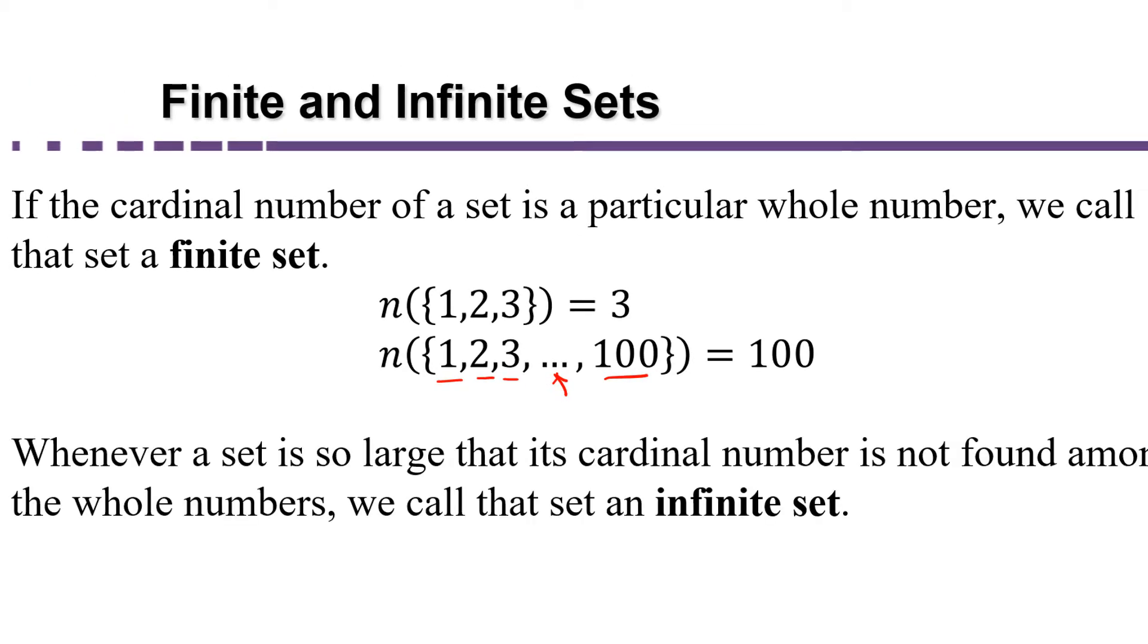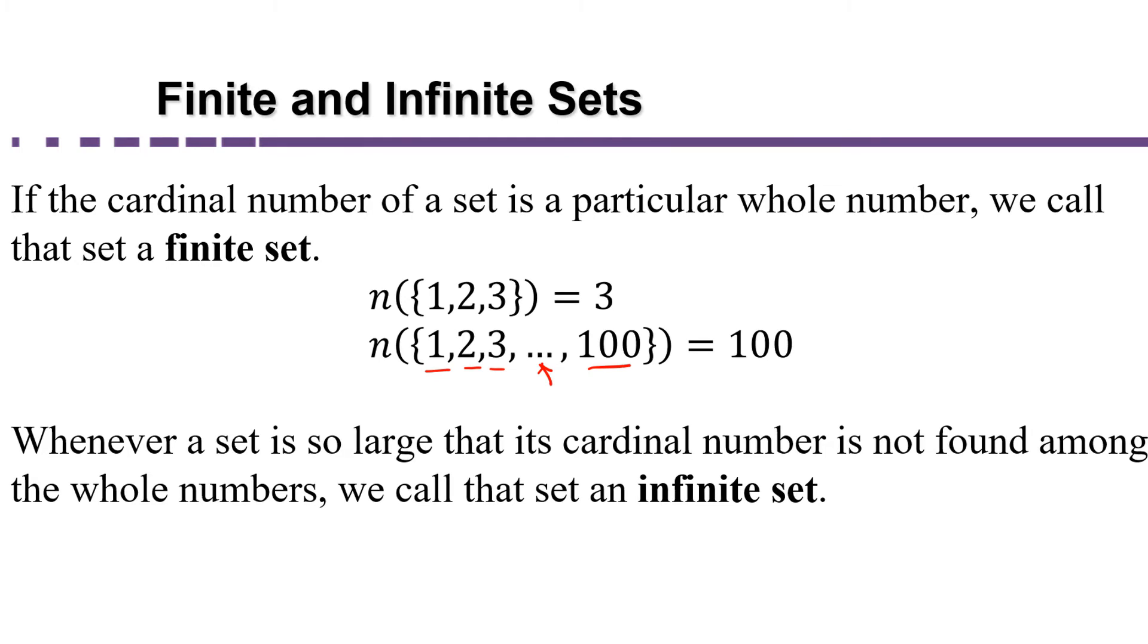Whenever a set is so large that its cardinal number cannot be found among the whole numbers, we call that an infinite set. So you often see sets that end in the dot dot dot. They don't have any largest element listed. Those are infinite sets.